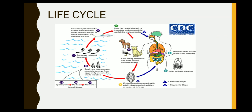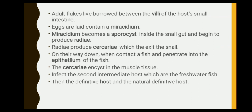So how does Heterophyes mature — what is its life cycle? First, the adult fluke lives buried between the villi of the host's small intestine. It takes 4 to 6 hours for Heterophyes to reach the small intestine of the host. The eggs contain a miracidium, which will not hatch until ingested by a snail or mud snail. Then the miracidium becomes a sporocyst inside the snail and begins to produce rediae. The rediae produce cercariae, which exit the snail.